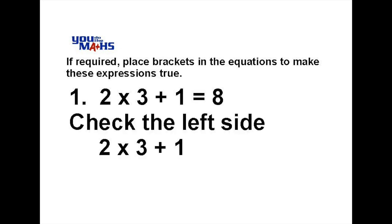Let's check the left side first of all and we can see there that we've got a multiplication so we do that first. 2 multiplied by 3 is 6, the remaining operation is plus 1. Now if we do that we're going to get an answer of 7 so clearly that's not correct. We need to do something different to this problem, insert some brackets to make sure that it's actually going to be correct.